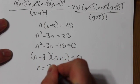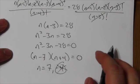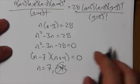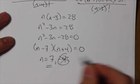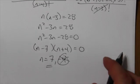So n is equal to either 7 or negative 4. And in this chapter, we don't work with negatives or fractions, so the answer here must be 7. And that's how you would work through that kind of a problem.